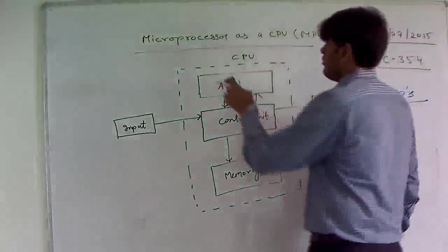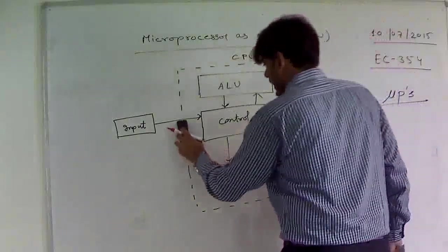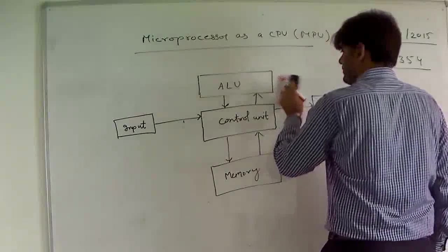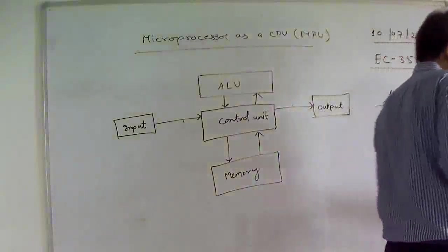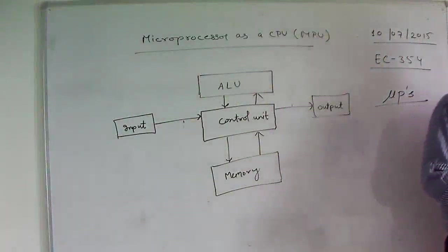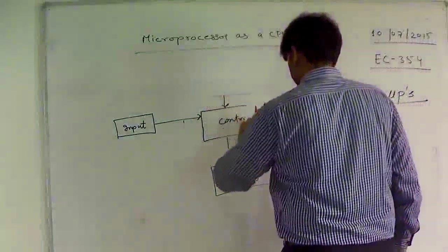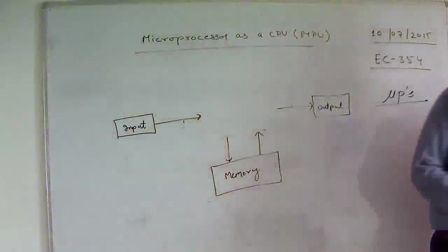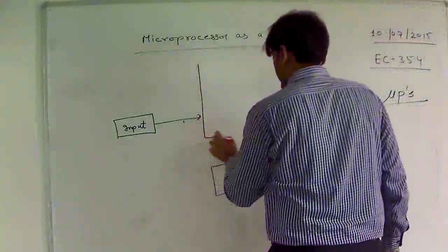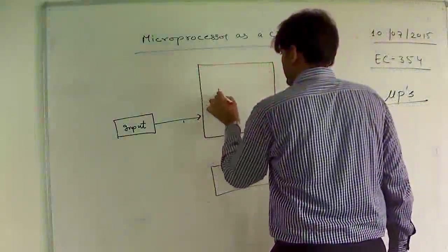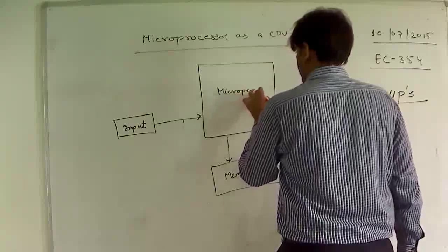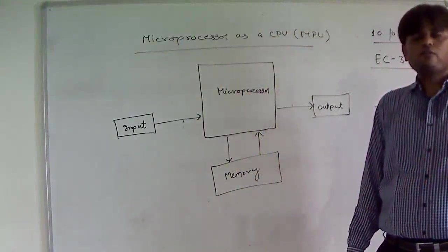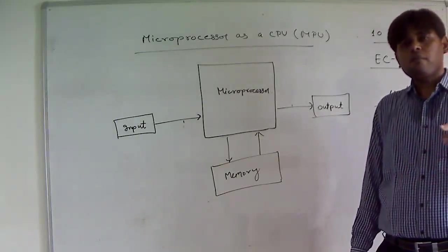So the block diagram of a microprocessor as a CPU shows that the ALU and the control unit are being put inside an integrated circuit which is called a microprocessor. A computer with a microprocessor as a CPU, or a micro processing unit as a CPU, is called a microcomputer.